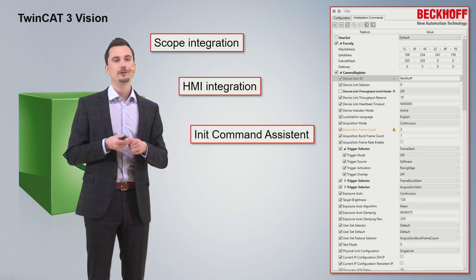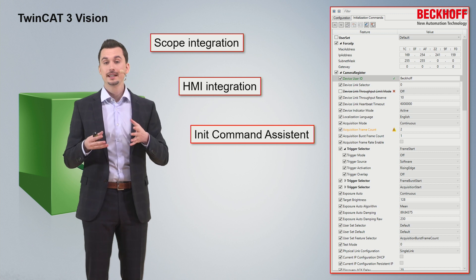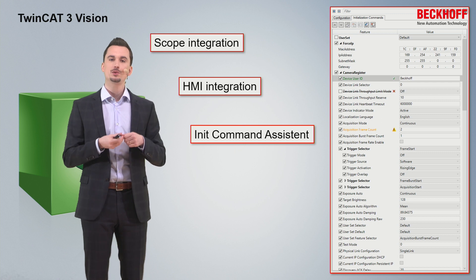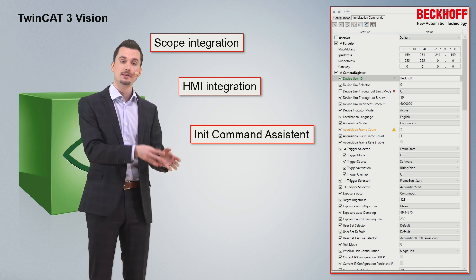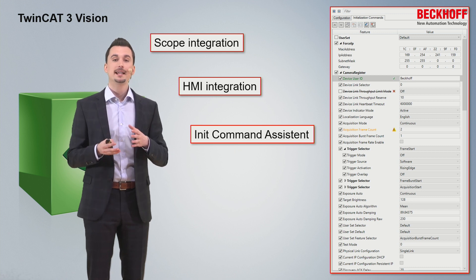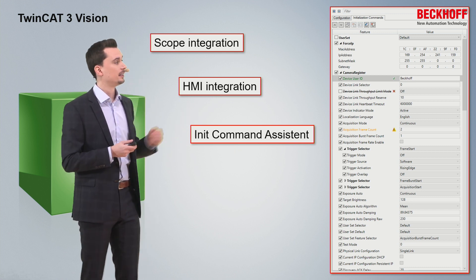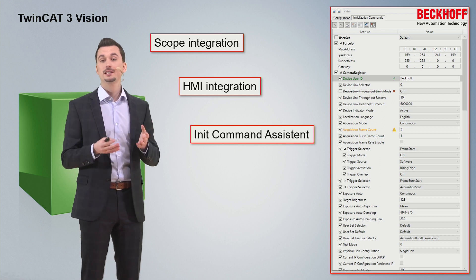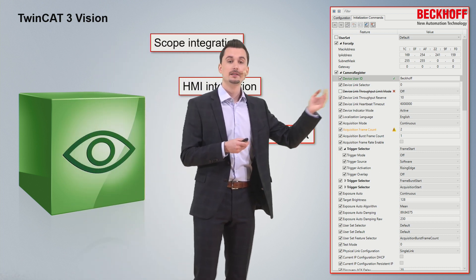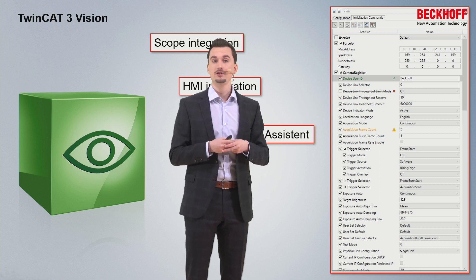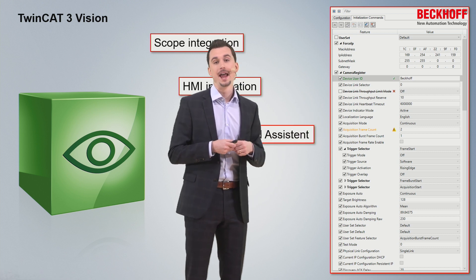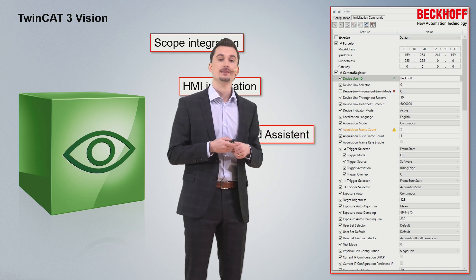Camera configuration is also possible within TwinCAT. It is pretty comparable to axis configuration, where you configure the axis and startup parameters are automatically created. In the case of a camera, these are init commands, which can also be displayed within a second tab in the engineering. So you can get an overview and also enable or disable certain init commands.